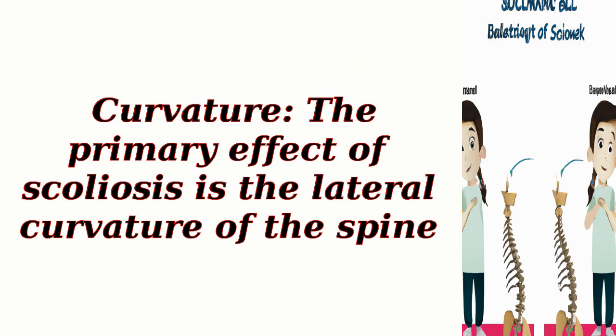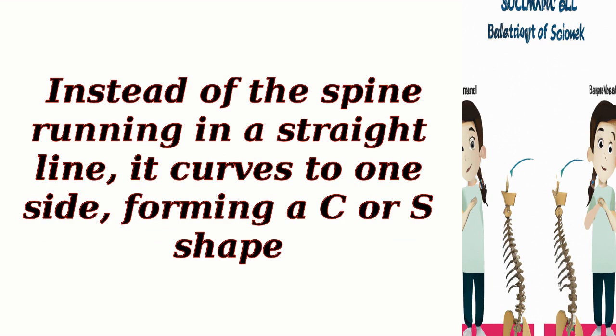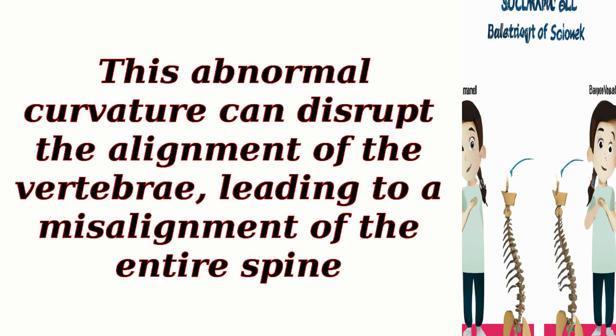Curvature: the primary effect of scoliosis is the lateral curvature of the spine. Instead of the spine running in a straight line, it curves to one side, forming a C or S shape. This abnormal curvature can disrupt the alignment of the vertebrae, leading to a misalignment of the entire spine.